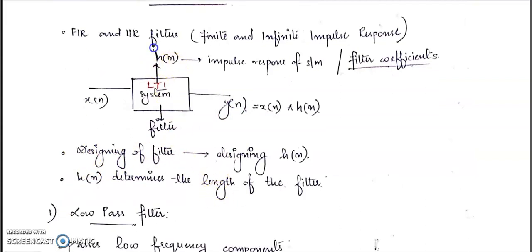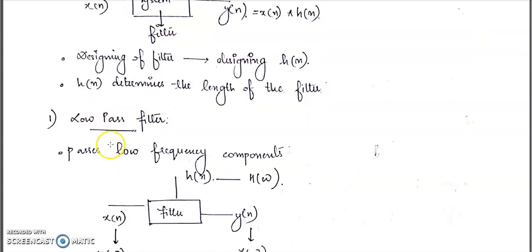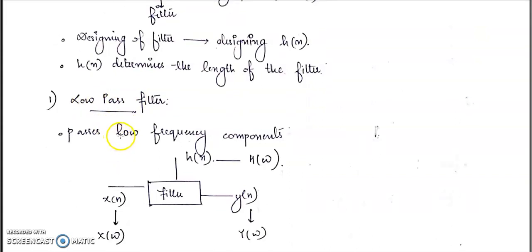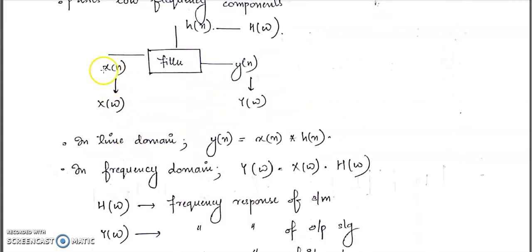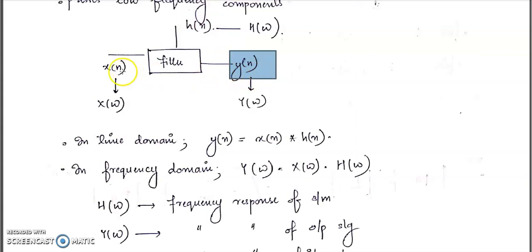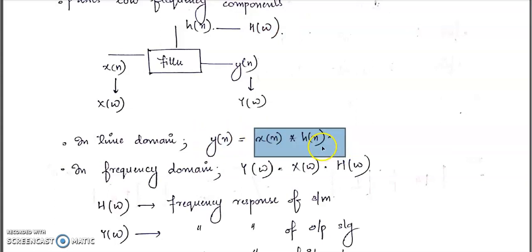For designing a filter, we want to design the filter coefficients — that is, we want to design h(n). As a sample, we consider a low pass filter. A low pass filter passes the low frequency components. The input is x(n), the impulse response is h(n), and the output is y(n). The frequency response of the input signal is X(ω), the frequency response of the output signal is Y(ω), and in the time domain, y(n) = x(n) convolved with h(n).